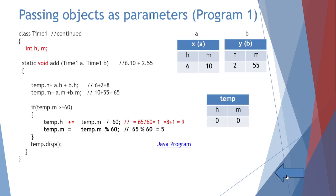temp.h = a.h + b.h = 8, and temp.m = a.m + b.m = 65. So after these two statements, the temp object has 8 and 65. But this is not correct because 65 minutes is invalid — minutes greater than or equal to 60 is equivalent to 1 hour.